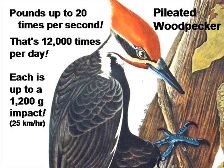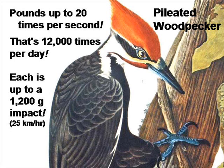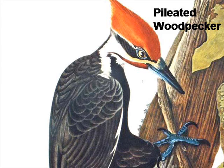Incredibly, the Pileated woodpecker can pound its head against trees at speeds of up to 20 times per second — that's 12,000 times per day, at speeds that create a force of up to 1200 g, or about 25 kilometers per hour. Try doing that yourself. Not only does this woodpecker not complain about headaches, but they thrive with this behavior. It is fundamental to their survival.